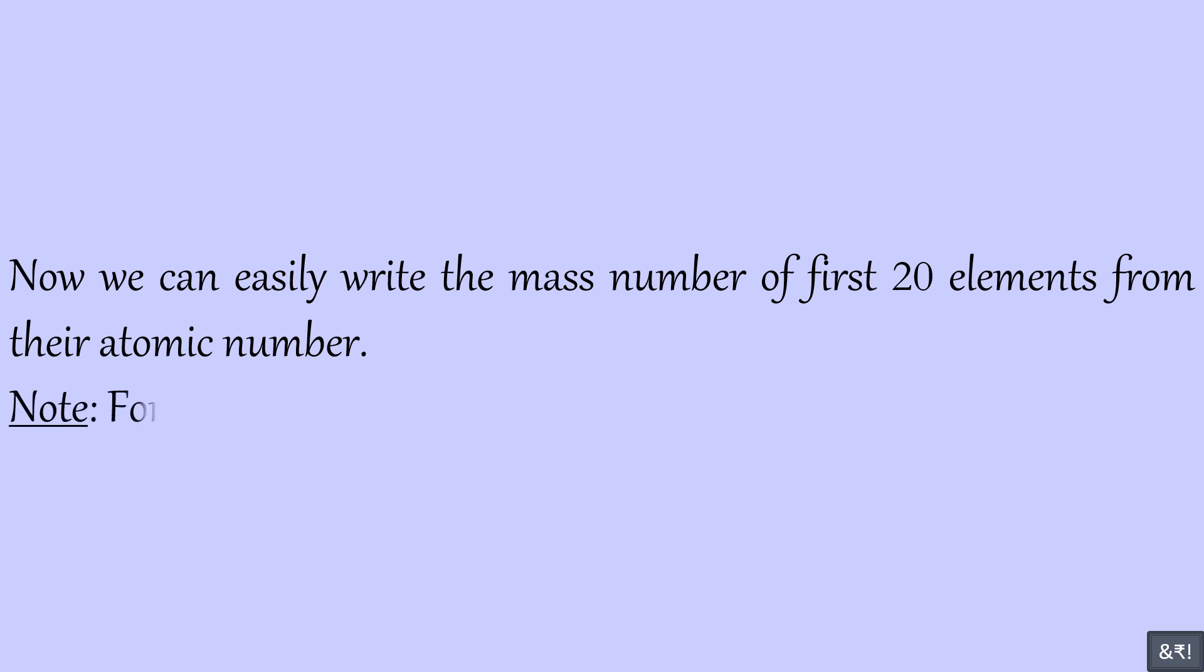Now we can easily write the mass number of first 20 elements from their atomic number. Note, for chlorine, CL, mass number is taken as 35.